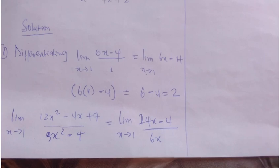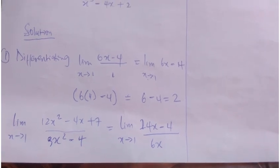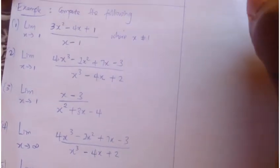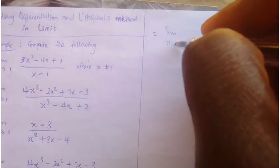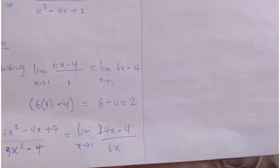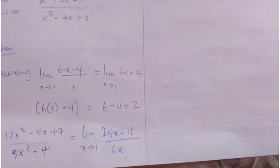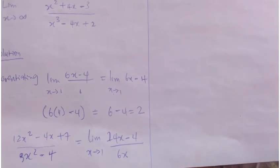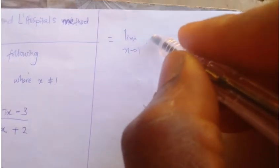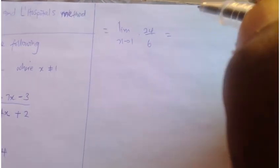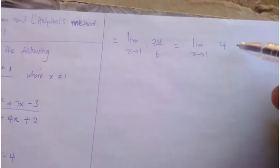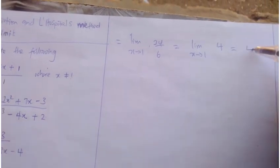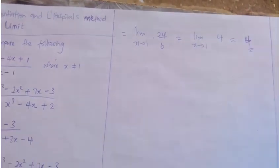Differentiating again until we get a constant: the limit as x tends to 1 of — differentiating 24x - 4 gives 24, and differentiating 6x gives 6. So we have 24 over 6, which equals 4. Remember, the limit of a constant is that constant itself. So my answer is 4.